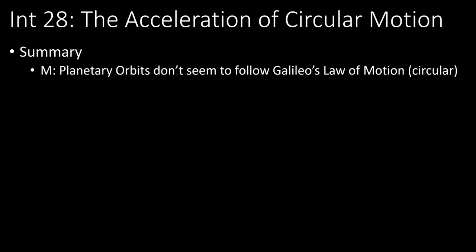The first one is the acceleration of circular motion. As I understand it, the basic summary goes that from observation we can tell that planetary orbits don't seem to follow Galileo's law of motion — namely, they don't follow what we now understand to be the law of inertia, because they don't proceed in a straight line.